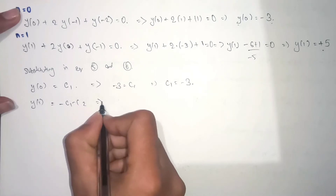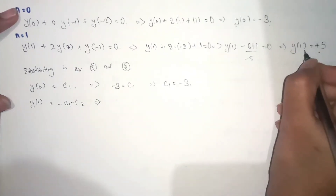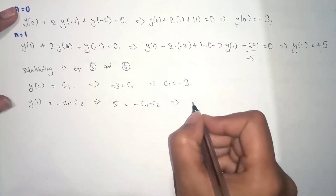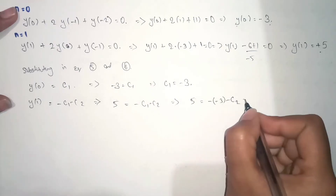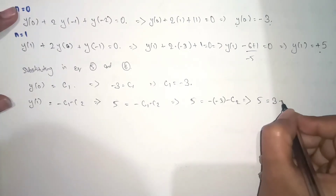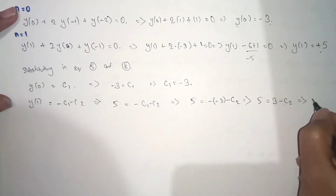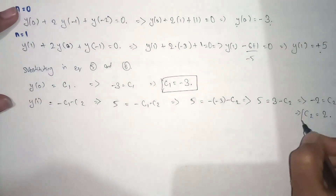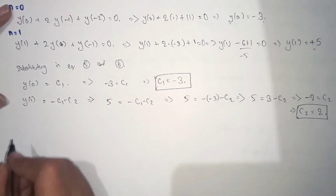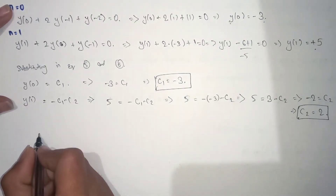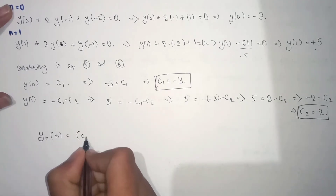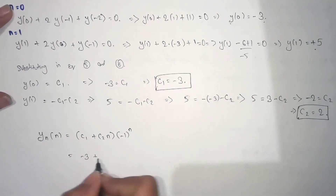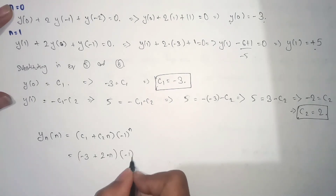From equation 6: y(1) = -C1 - C2. Substituting y(1) = 5 and C1 = -3: 5 = -(-3) - C2 = 3 - C2. Rearranging: C2 = 3 - 5 = -2, so C2 = 2. We now have C1 = -3 and C2 = 2.